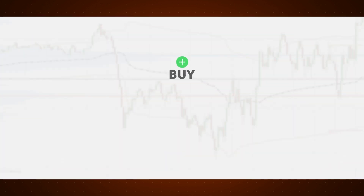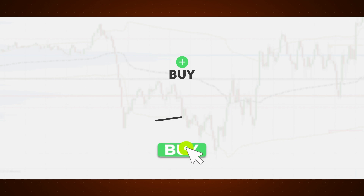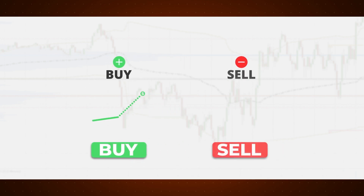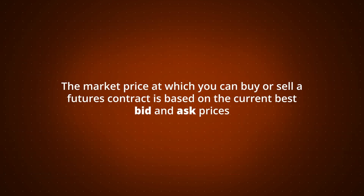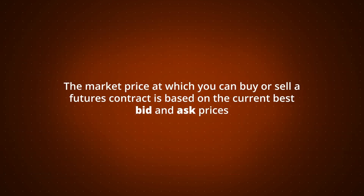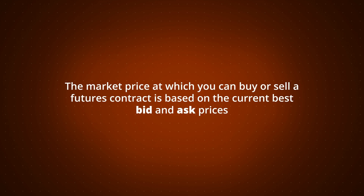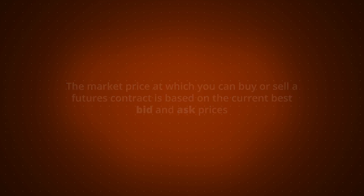A buy order means you want to buy a long position expecting the market price to increase. A sell order means you want to go short and sell the market expecting the price to decrease. The market price at which you could buy or sell a futures contract is based on the current best bid and ask prices.